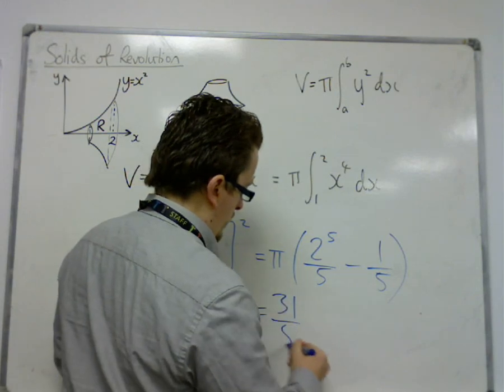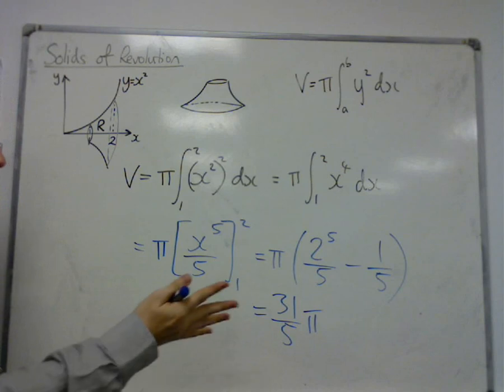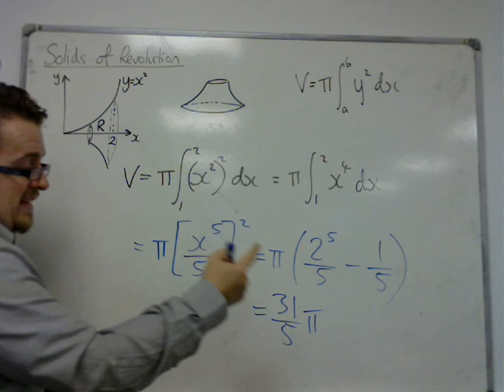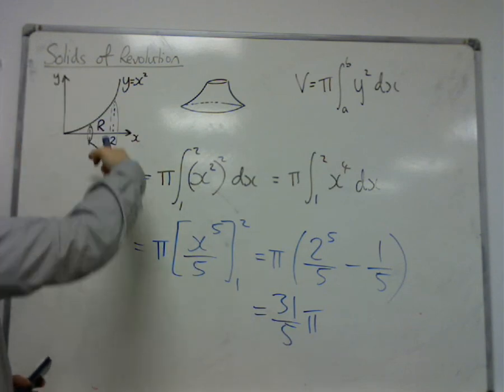So that's 31/5 π. 2, 4, 8, 16, 32, yeah. So, 31 over 5 π. And that is the exact volume that is given here.